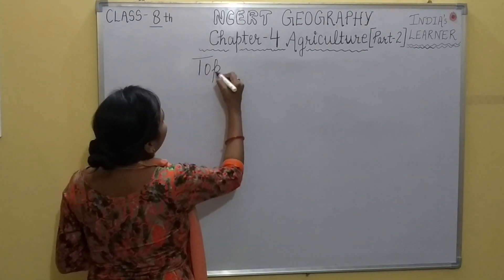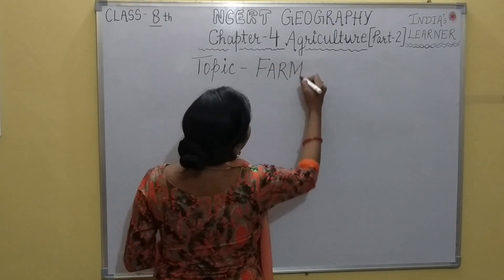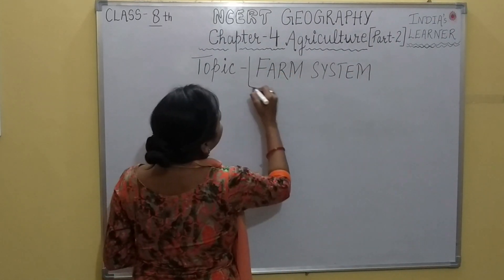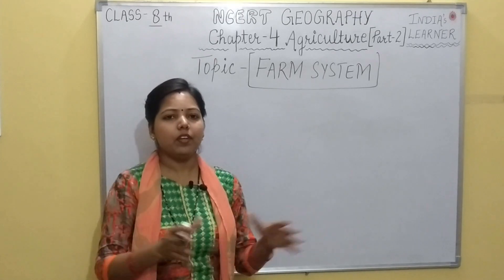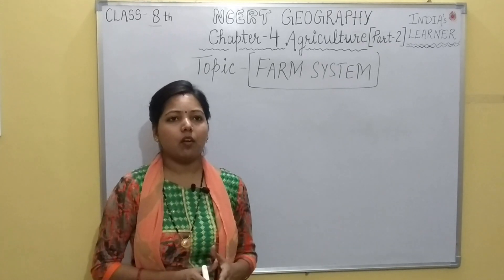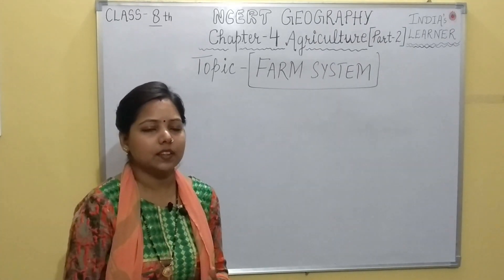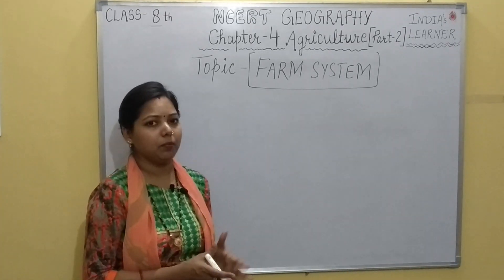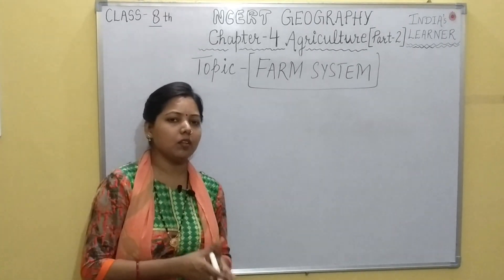Our first topic is Farm System. With every form of agriculture, so many activities are done, and a variety of inputs are required. All these activities collectively form a system which works in a general way — that is called the Farm System. In the Farm System, all activities are done in a general way, like every system — these are inputs, process, and output.